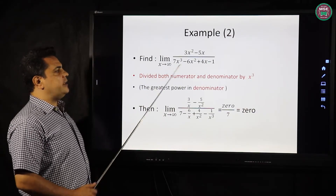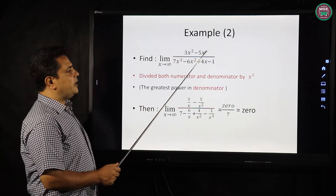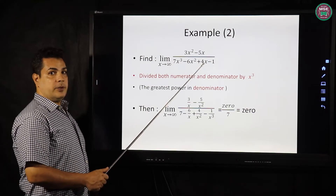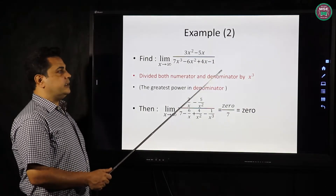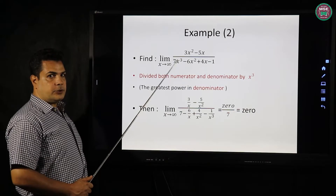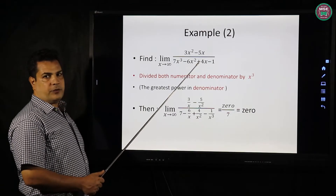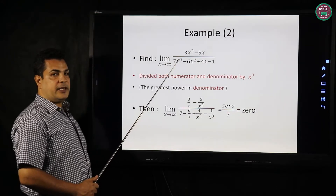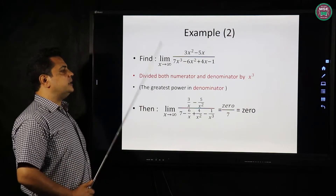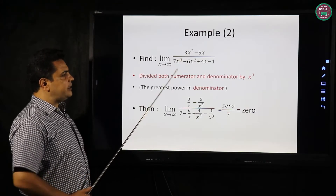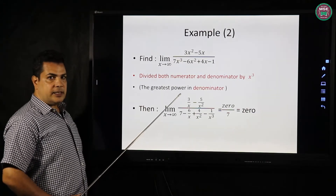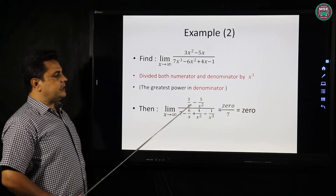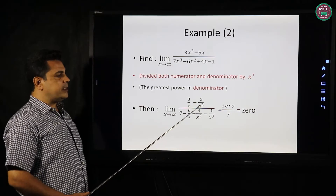Another one. Limit x tends to infinity of 3x squared minus 5x over 7x cubed minus 6x squared plus 4x minus 1. Divide numerator and denominator by the greatest power of x, which equals x cubed. So 3x squared over x cubed equals 3 over x, and negative 5x over x cubed equals negative 5 over x squared.